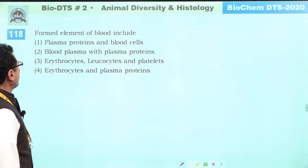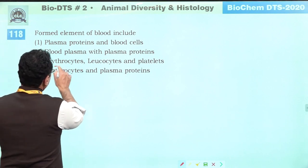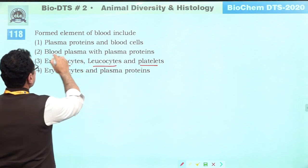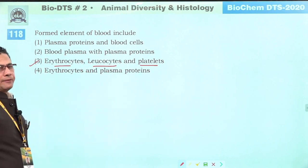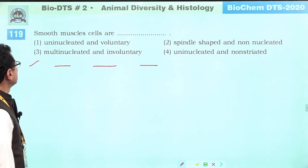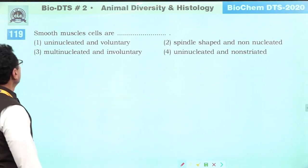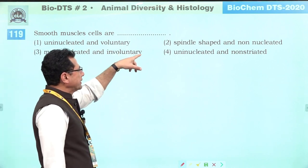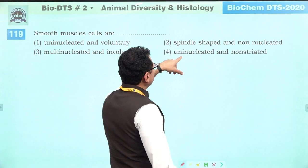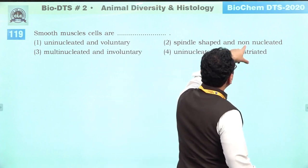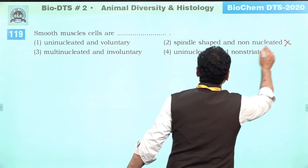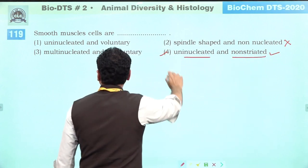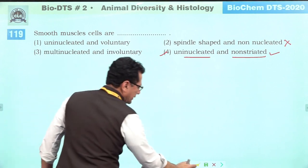Formed elements include erythrocytes, leukocytes, and platelets. Smooth muscle cells are uninucleated and involuntary. They are non-nucleated — incorrect. They are uninucleated, spindle-shaped, and non-striated. Fourth is correct. Multinucleated smooth muscle cells — not correct, they are uninucleated.